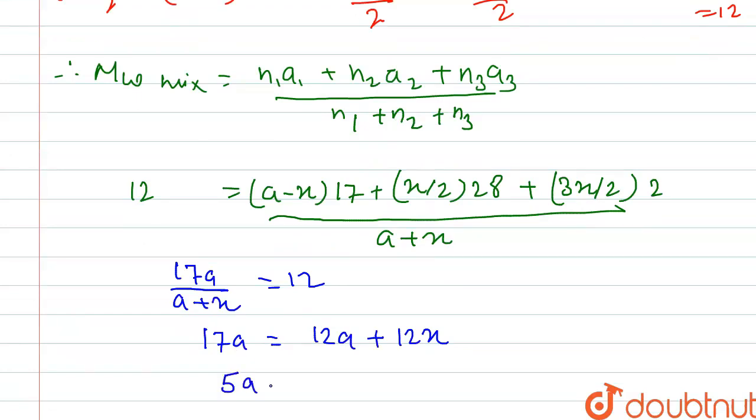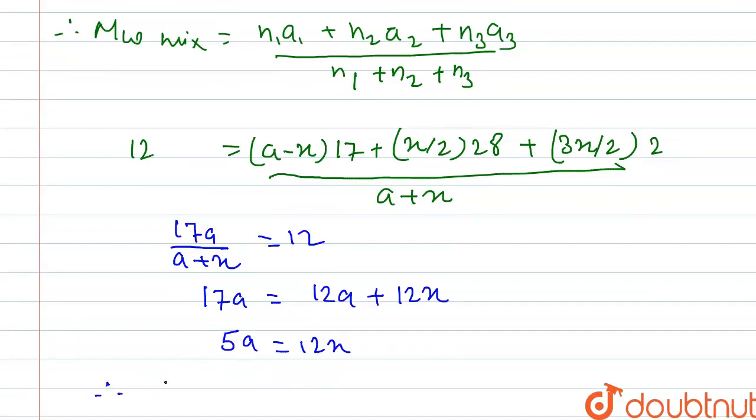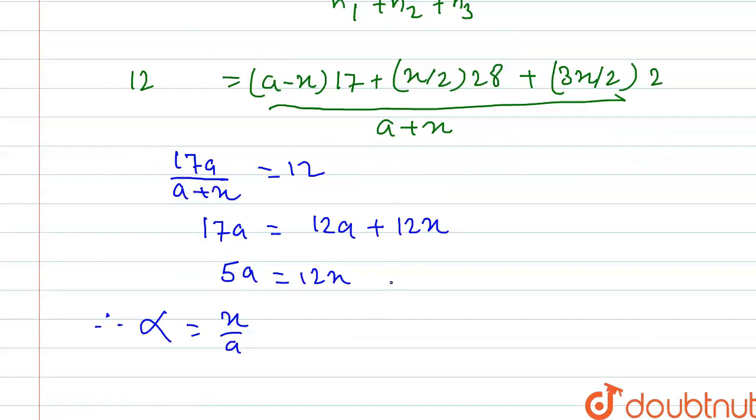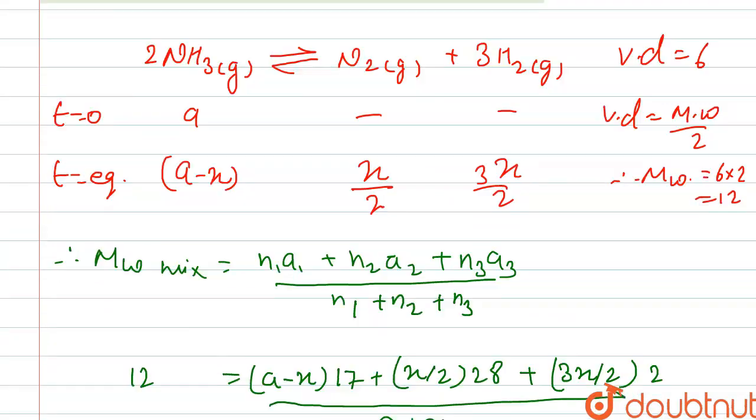From here we know that the degree of dissociation alpha equals x/a. So from here we calculated x/a equals 5/12, which gives us the percentage as 41.667%. This is the percentage dissociation of ammonia.